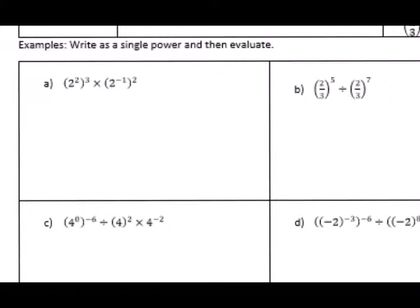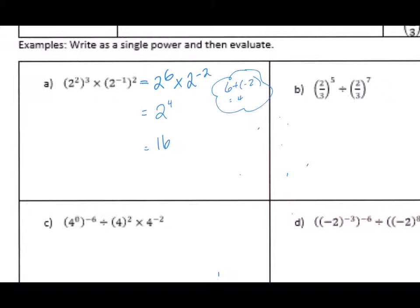For problem A: 2 raised to 2, raised to 3 means 2 times 3 gives us 2 to the 6. For the next term, negative 1 and 2 multiply together to give us negative 2. Now that we've applied the power of a power rule, we use the multiplication rule: 6 plus negative 2 gives us 4. So we get 2 to the 4, which ends up being 16.